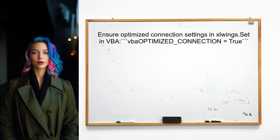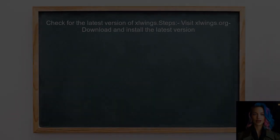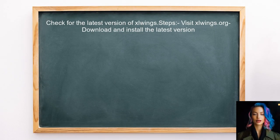The user should ensure that they are using optimized connection settings in Excel Wings. This can help reduce the overhead of communication between Excel and Python. Additionally, the user can check if they are using the latest version of Excel Wings, as updates often include performance improvements and bug fixes that can enhance speed.